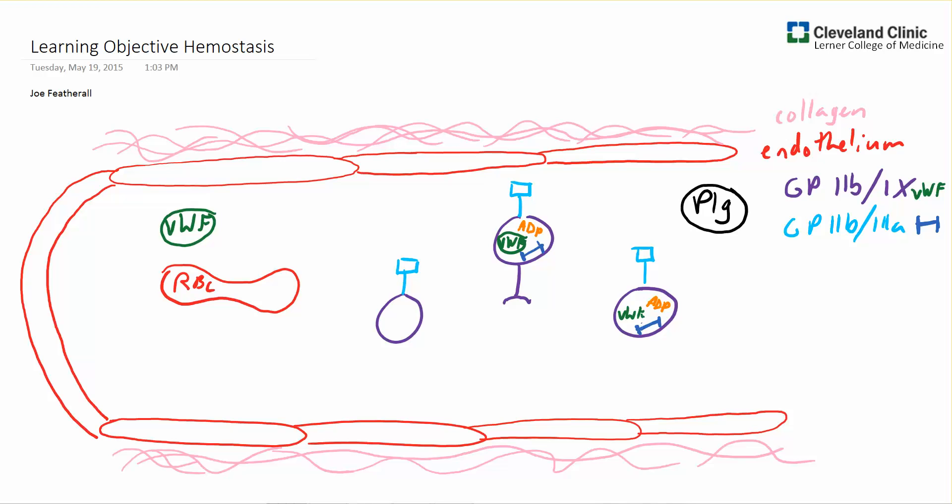The last receptor that we'll talk about is glycoprotein Ia/IIa. And this binds directly to collagen depicted by our pink squiggles.